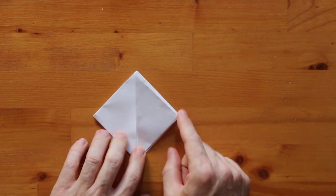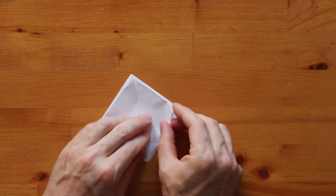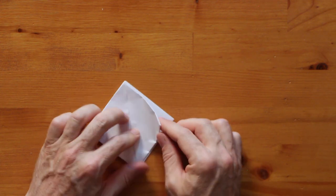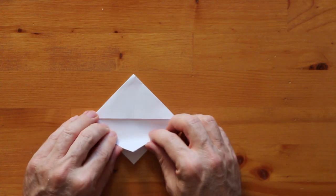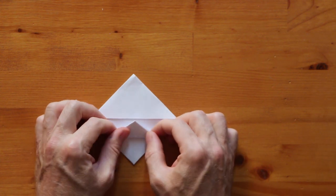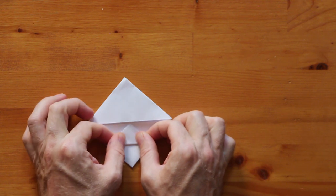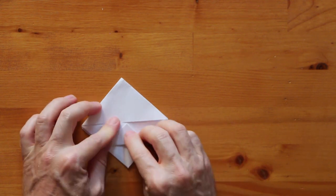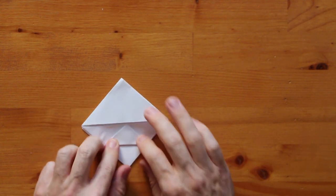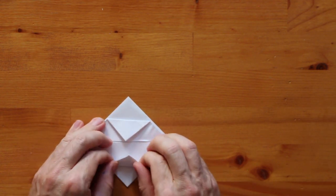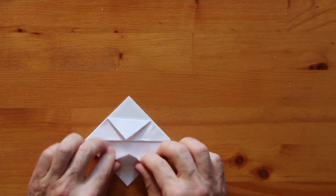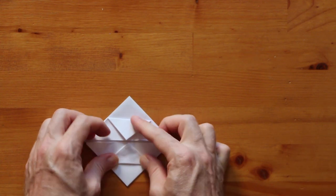And now we're going to take each one of these edges and fold them into the center. So sometimes it helps if you rotate it towards you, it helps you make that fold. So this corner goes into that center line right there. And we're going to do that three more times. So I'm going to rotate the paper so that I can face the fold or move that corner away from me each time.